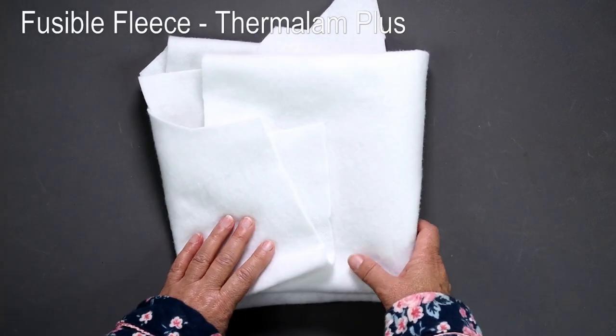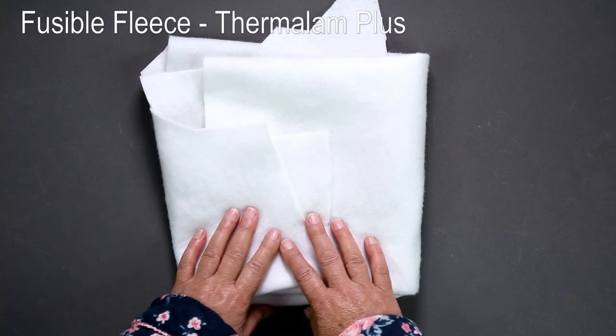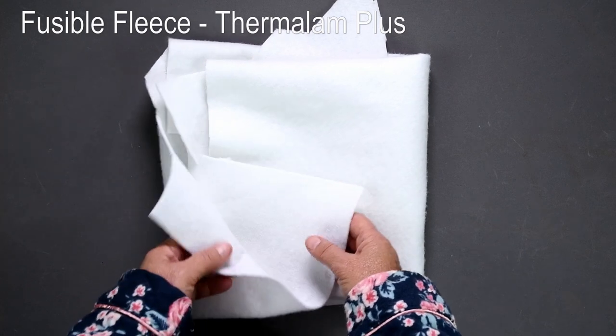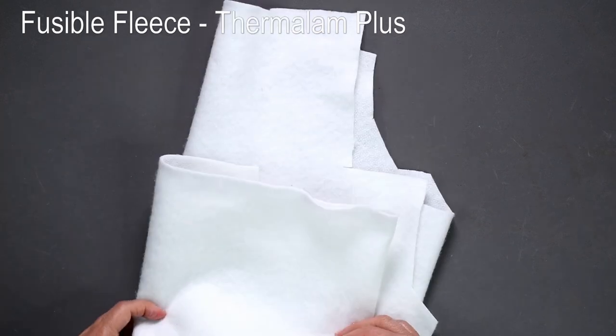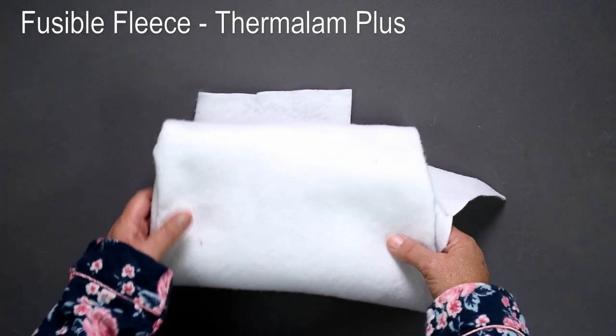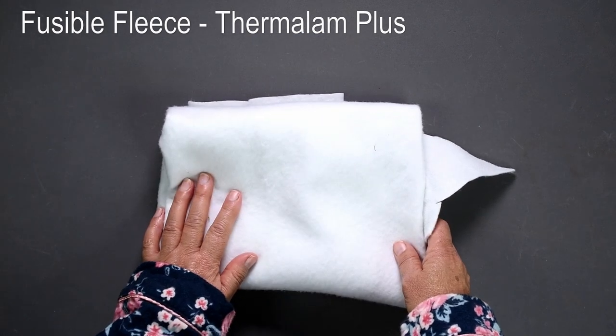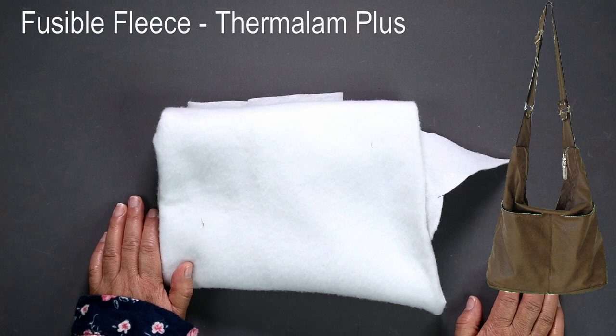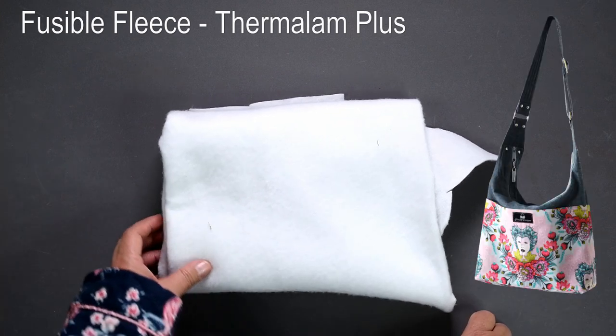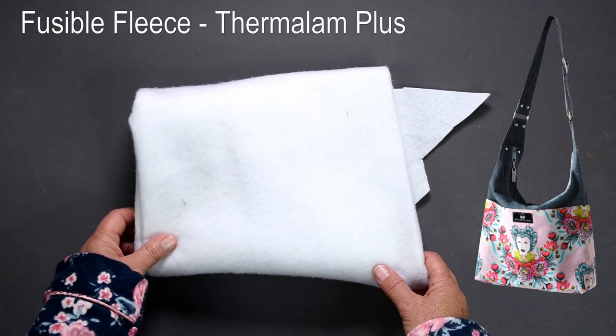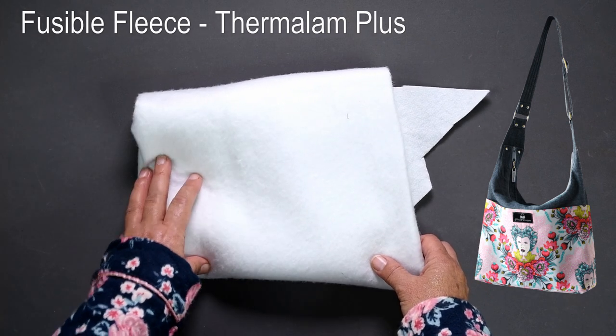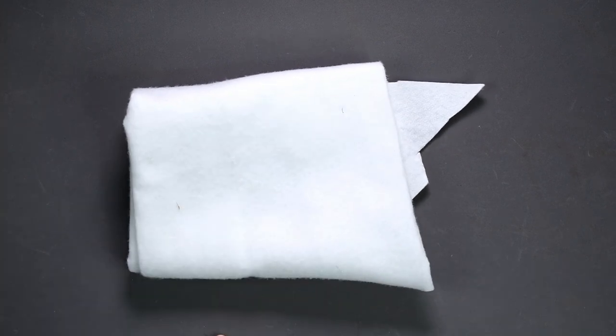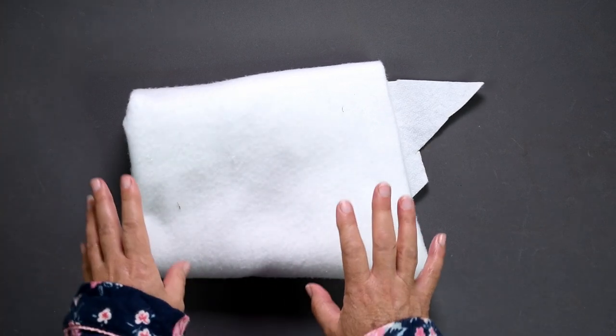Another of my favorites is fusible fleece. Again there are several different brands and weights available but I mostly use either Thermolam Plus or Vilene H640. Now I use the fleece where I want my bags to be less structured such as in a slouchy bag like my Snazzy Slouch.